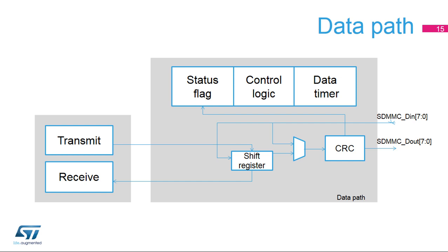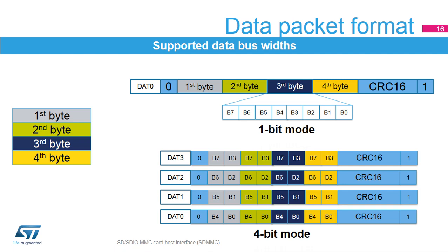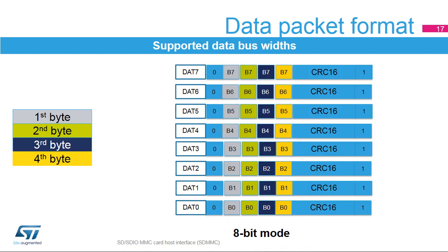At the end of the data packet, the CRC is calculated automatically. Depending on the configured data bus width, the datapath sends data blocks over one pin (SDMMC D0), four pins (SDMMC D0 to SDMMC D3), or eight pins (SDMMC D0 to SDMMC D7). A start bit is generated on the bus followed by the data packet, then the CRC-16 and end bit are appended. In a 4-bit data width configuration, each line has its own start bit, end bit, and CRC-16 checksum. In 8-bit mode, the four bytes are sent over the SDMMC bus and for each SDMMC CK clock cycle, a byte is shifted out with a start bit, end bit, and CRC-16 checksum on each data line.